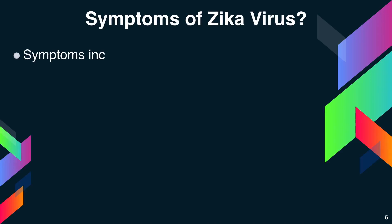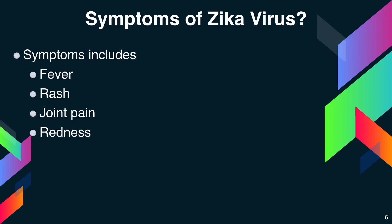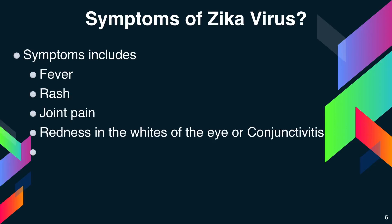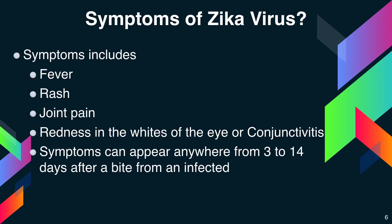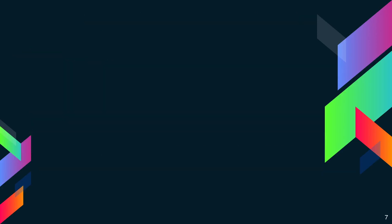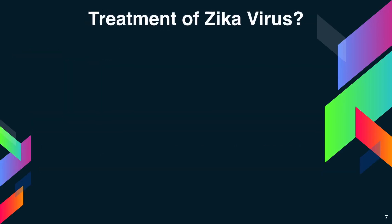Symptoms of Zika virus include fever, rash, joint pain, and redness in the eyes or conjunctivitis. Symptoms can appear anywhere from 3 to 14 days after a bite from an infected mosquito.